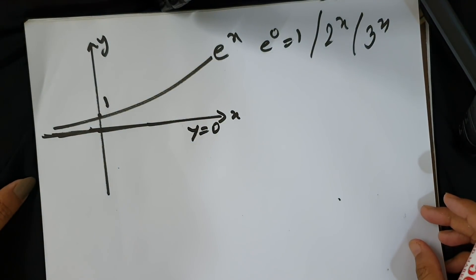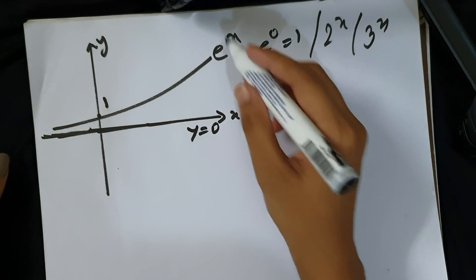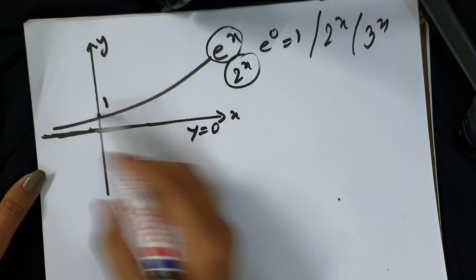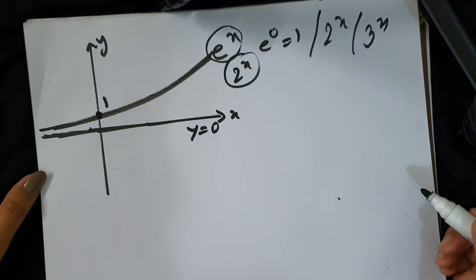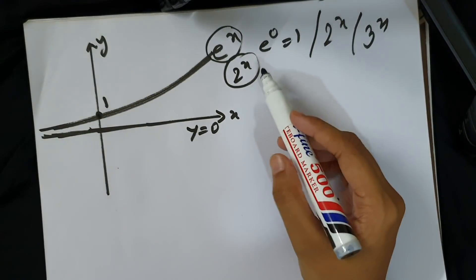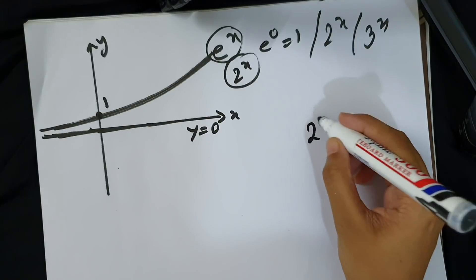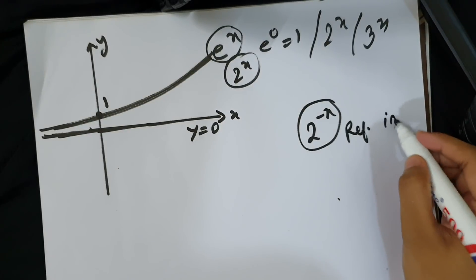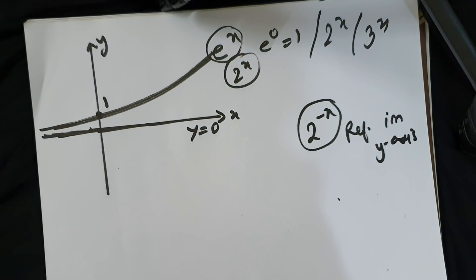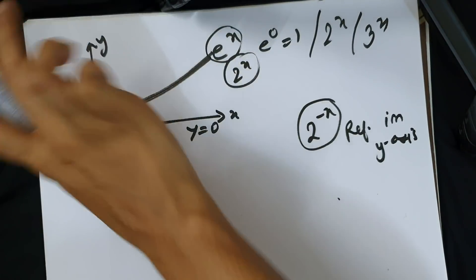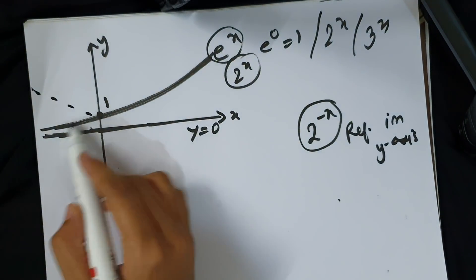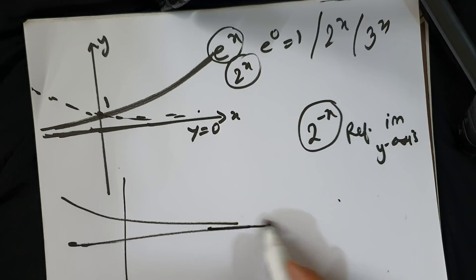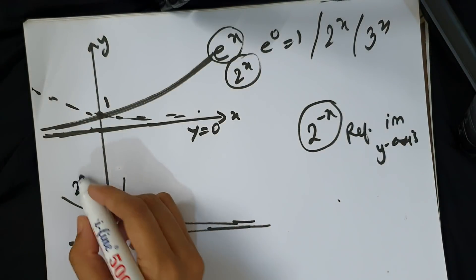For the basic graph, suppose we have 2 to the power x. Draw one coordinate at y equals 1. Now suppose 2 to the power minus x — this is a reflection in the y-axis. The total graph reflects in the y-axis, placing the graph on the opposite side for 2^(−x).